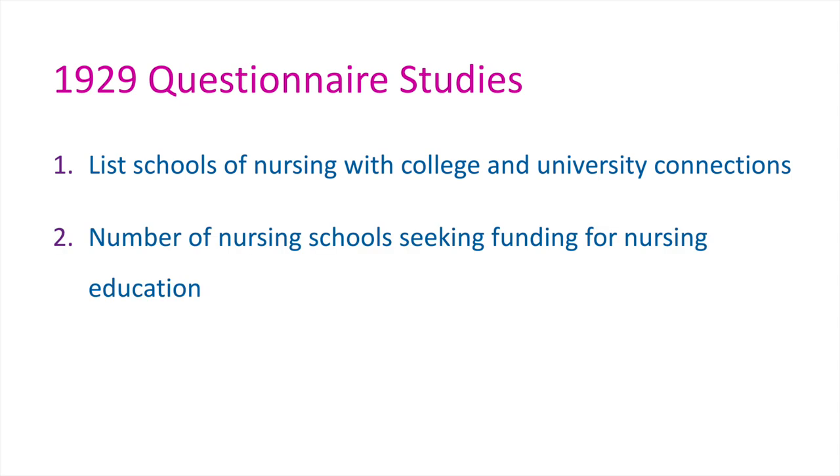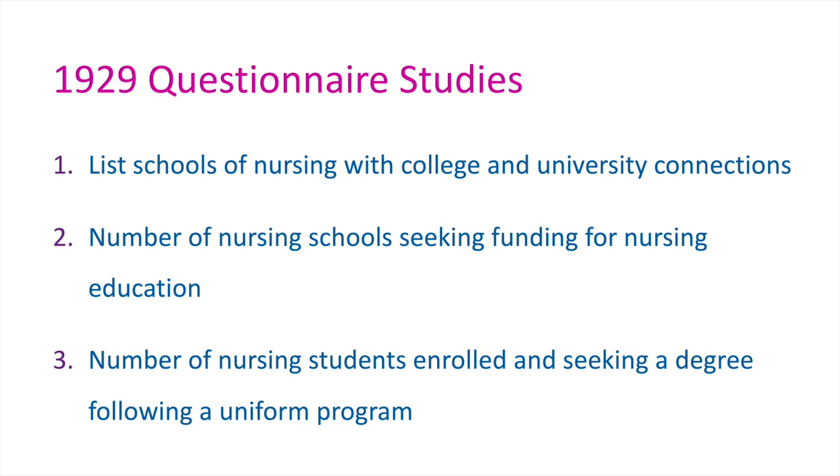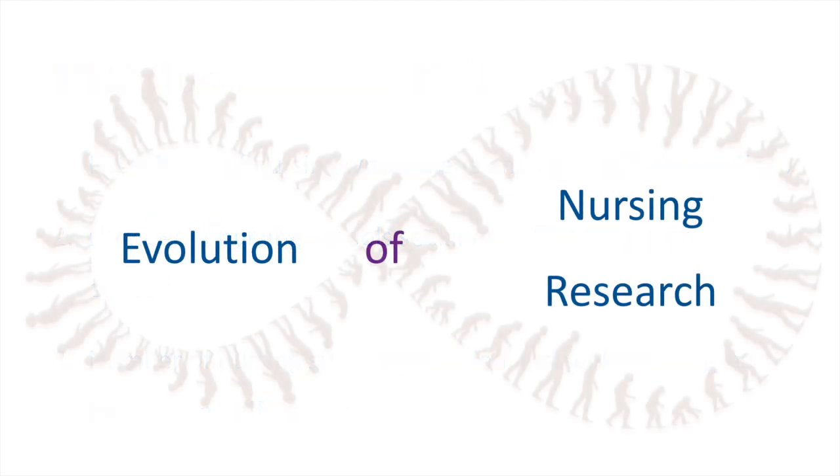One, to compile a list of schools of nursing with college and university connections and the extent the schools offered courses leading to a degree. Two, to determine the number of nursing schools seeking funding for nursing education. And finally, three, to determine the number of nursing students enrolled and seeking a degree following a uniform program. While this is an example of only one NLN committee at work, many other committees were fast at work collecting and studying the discipline. For example, the committee on grading, a short-term committee responsible for collecting outcome data from schools of nursing across the country, or the education committee, a committee responsible for curriculum development.